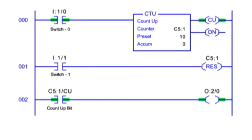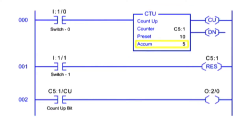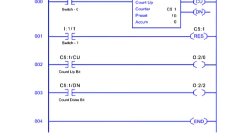Count up and count down instructions are used to count rung transitions. The count up instruction, or CTU, is used to count false to true rung transitions. When rung conditions for a CTU instruction have made a false to true transition, the count up enable bit is energized and the accumulated value is incremented by one count.